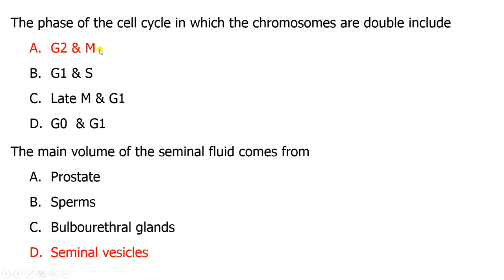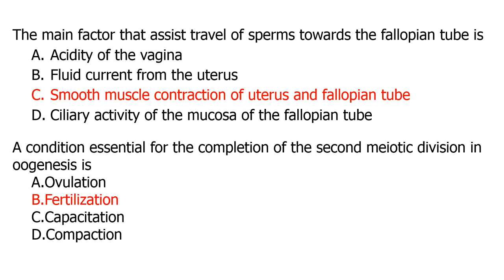During G2 and M phase, the chromosomes are already doubled — remember S phase is where DNA replication occurs, followed by G2 and then M. The main volume of seminal fluid comes from the seminal vesicles: 60% from the seminal vesicles, 30% from the prostate, around 5–8% from the bulbourethral (Cowper's) glands, and roughly 1–2% is sperm. The main factor assisting sperm travel toward the fallopian tube is smooth muscle contraction of the uterus and fallopian tube, facilitated by the female orgasm. An alkaline environment promotes sperm movement, while vaginal acidity does not.